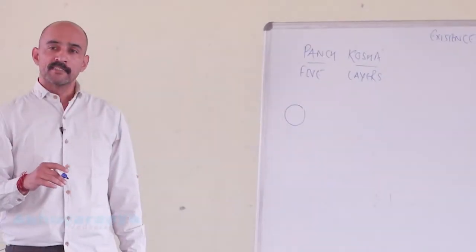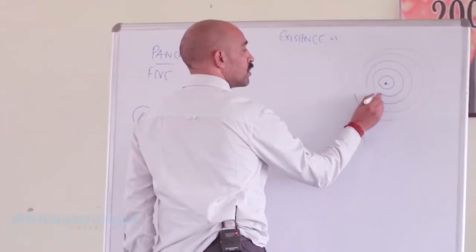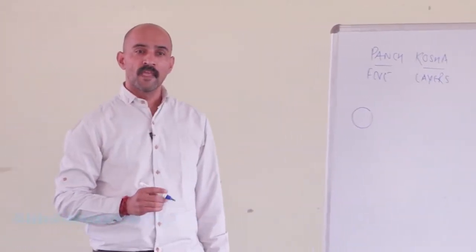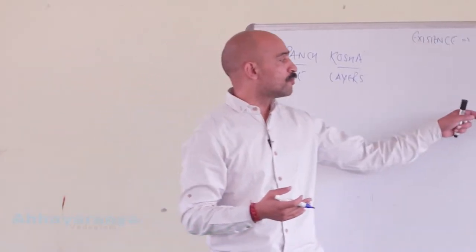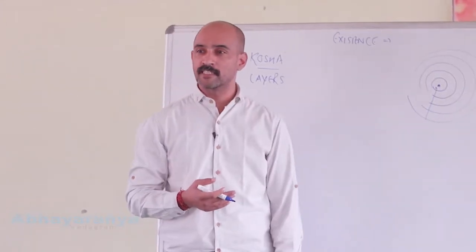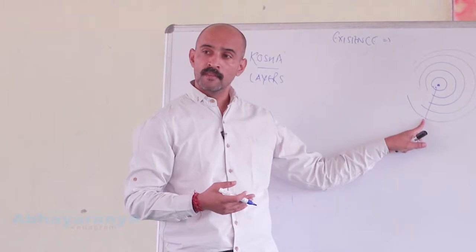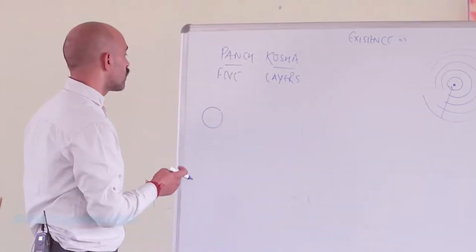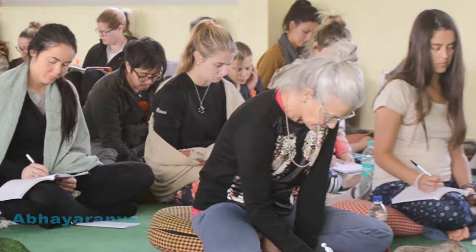With yoga practices, the idea is to move from this fifth layer towards the core. As we refine our observational skill, we move step by step into these layers of existence. The most superficial one is known as Annamaya Kosha.